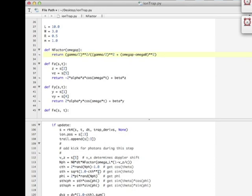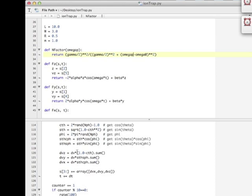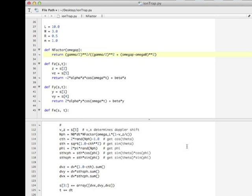Now remember, to generate a uniform distribution of solid angles, or a uniform distribution of thetas and phis, you can set the cosine of theta to be a uniformly distributed random number between negative 1 and plus 1. And the sine of theta is, of course, just the square root of 1 minus cosine theta squared. Phi is a uniformly distributed random number between 0 and 2 pi. And then sine theta cosine phi, sine theta sine phi, I can compute directly.